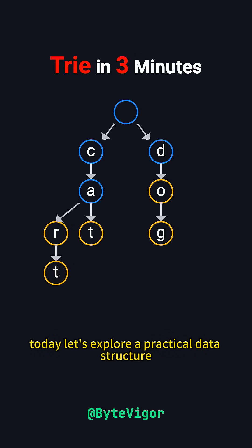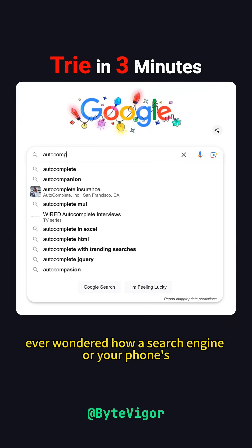Today, let's explore a practical data structure called the trie, also known as a prefix tree. It's great for handling problems like prefix matching, word searches, and autocomplete. Ever wondered how a search engine or your phone's keyboard suggests words as you type? Trie is a key player behind that. Let's break it down.